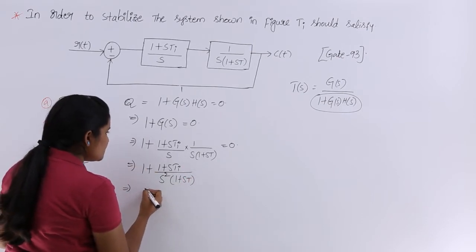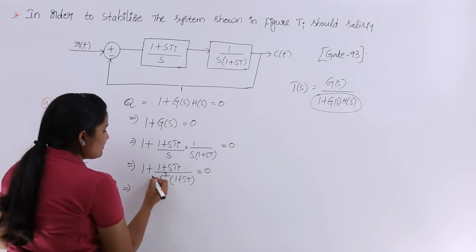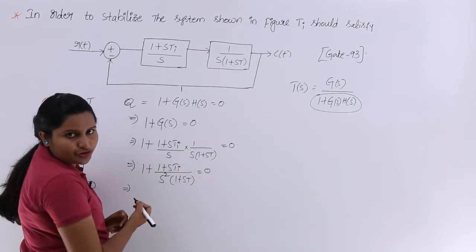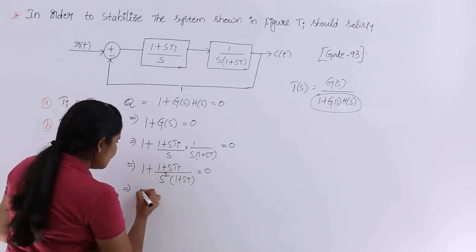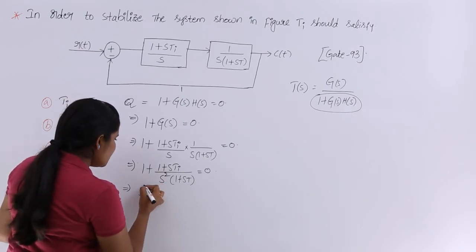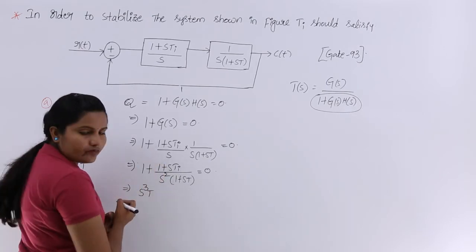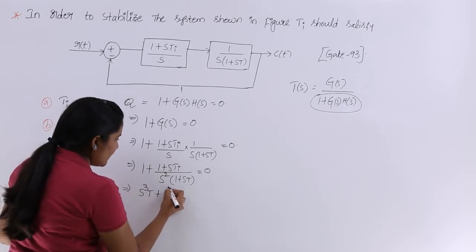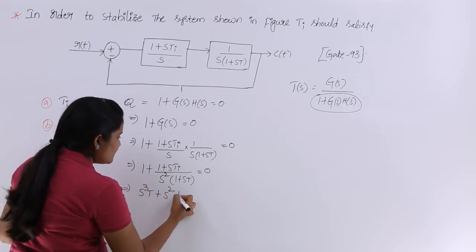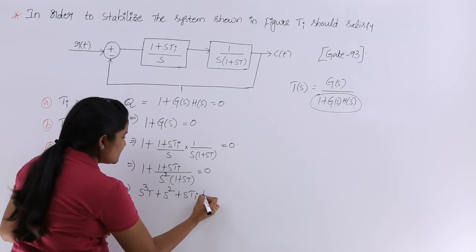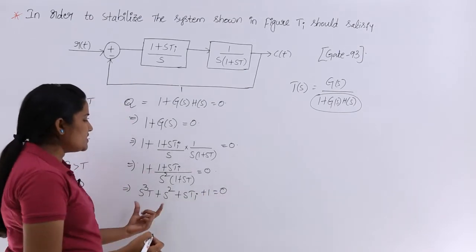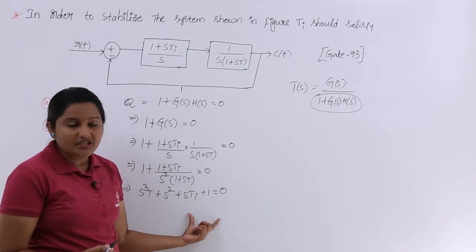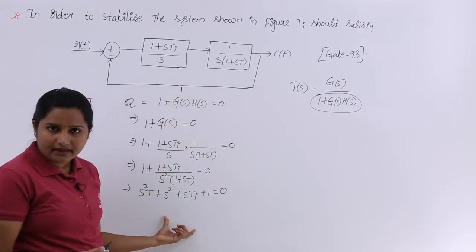So 1 + G(S) = 0 means we cross-multiply, sending the denominator across. The resultant characteristic equation is: S³·T + S² + S·Ti + 1 = 0. This is the characteristic equation derived from this block diagram.